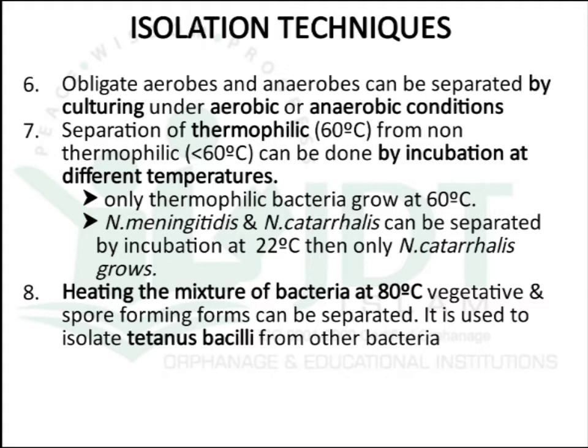The seventh method is separation of thermophiles from non-thermophiles. Thermophiles are microorganisms which show optimum growth at 60°C, while non-thermophiles grow best at less than 60°C. By incubating at different temperatures, only thermophilic bacteria will grow at 60°C. For example, Neisseria meningitidis and Neisseria catarrhalis can be separated by incubation at 22°C, since Neisseria catarrhalis is a non-thermophilic bacterium.